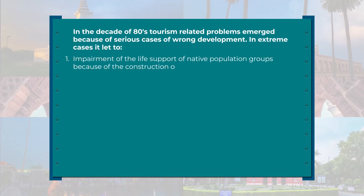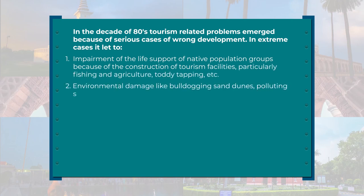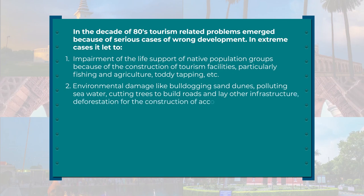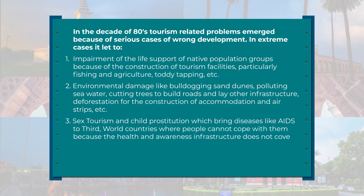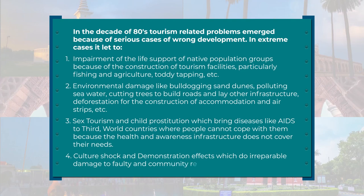In the decade of the 1980s, tourism-related problems emerged because of serious cases of wrong development. In extreme cases this led to: number one, impairment of the life support of native population groups because of the construction of tourism facilities — particularly affecting fishing, agriculture, toddy tapping, etc. People started leaving their traditional businesses to venture into tourism, and the lifeline of the traditional system of self-sustainability was lost. People became more and more dependent on things brought from outside wherever tourism developed. Number two, environmental damage — like bulldozing sand dunes, polluting seawater, cutting trees to build roads and other infrastructure, and deforestation for construction of accommodation — has led to much debate about whether such development is sustainable.